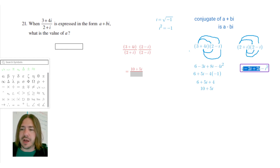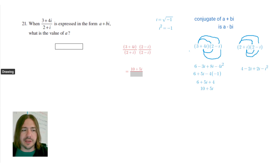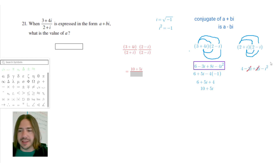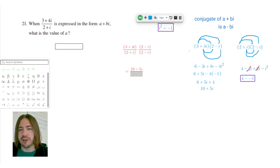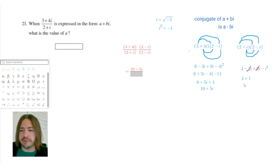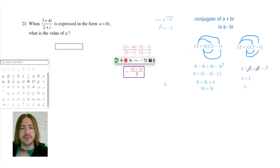We have negative 2i plus 2i, which is exactly what we were hoping for — they cancel out and give zero. So we're left with 4 minus i squared. Since i squared equals negative 1, that's 4 minus negative 1, which is 4 plus 1, equaling 5. So the denominator simplifies to 5.